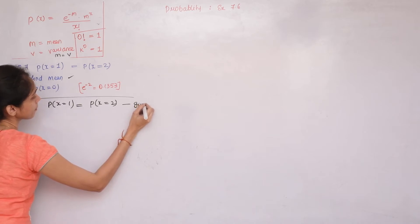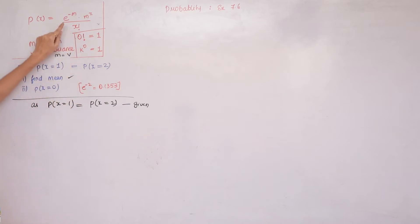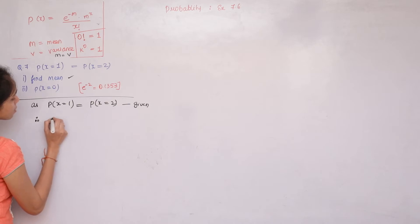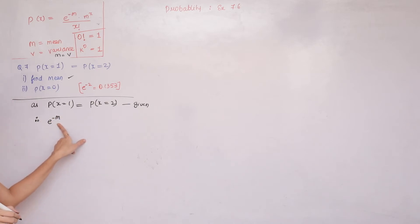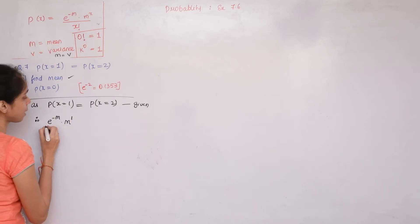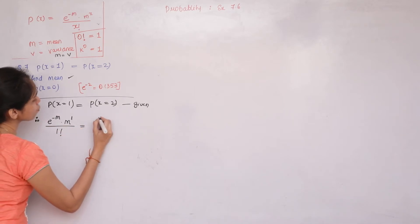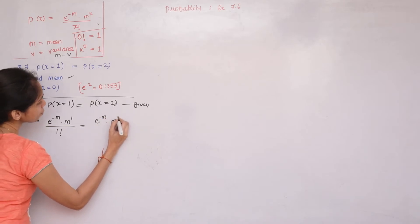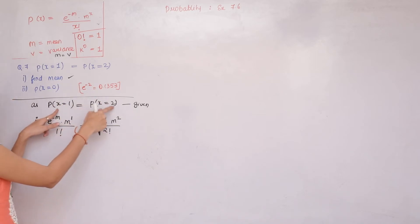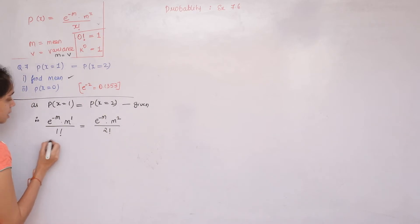Given P(X=1) = P(X=2), we substitute the Poisson formula for each: e^(-m) × m^1 / 1! = e^(-m) × m^2 / 2!. Since both probabilities are equal, their formula values are also equal. We now rearrange to isolate m.